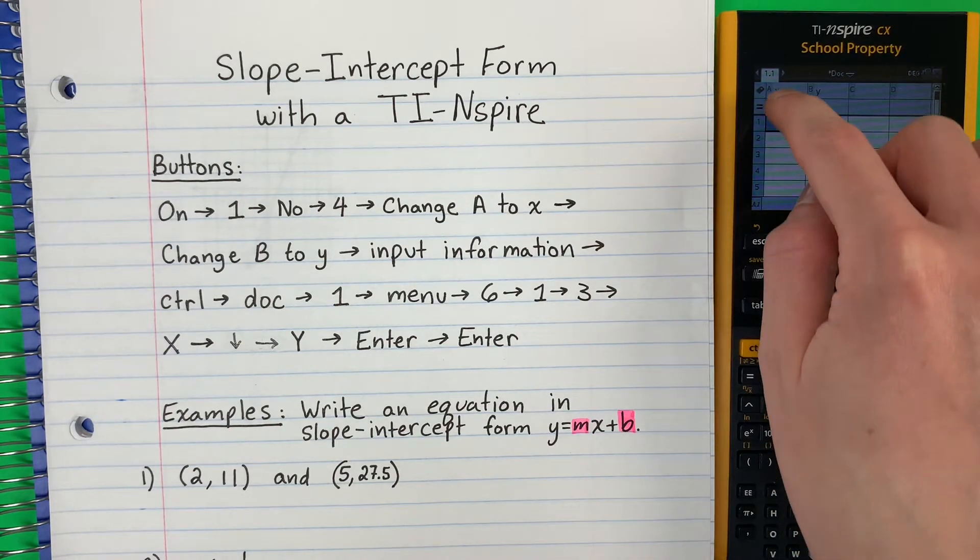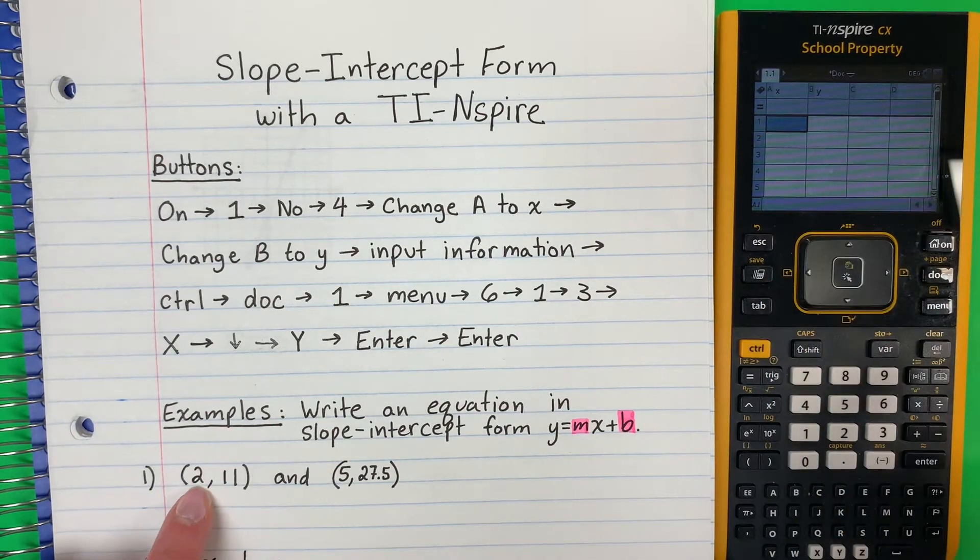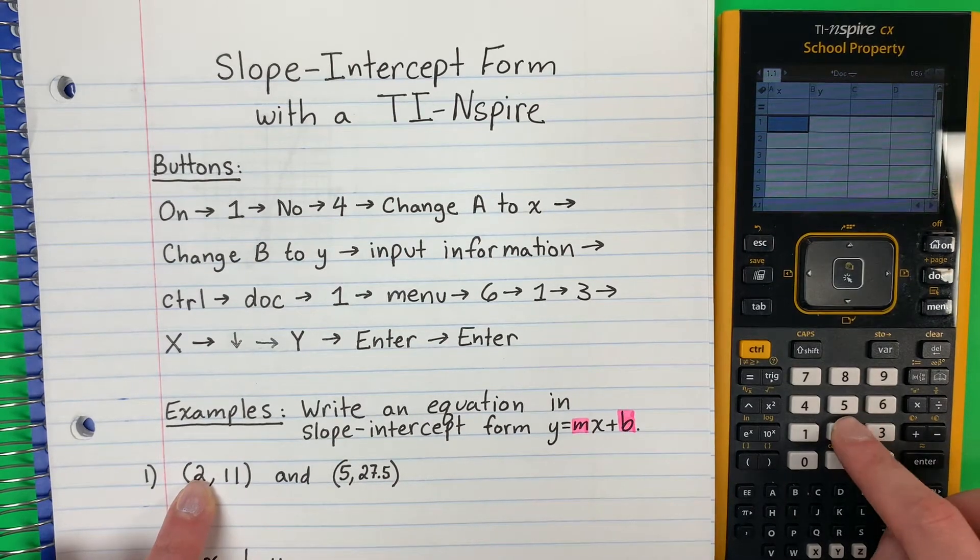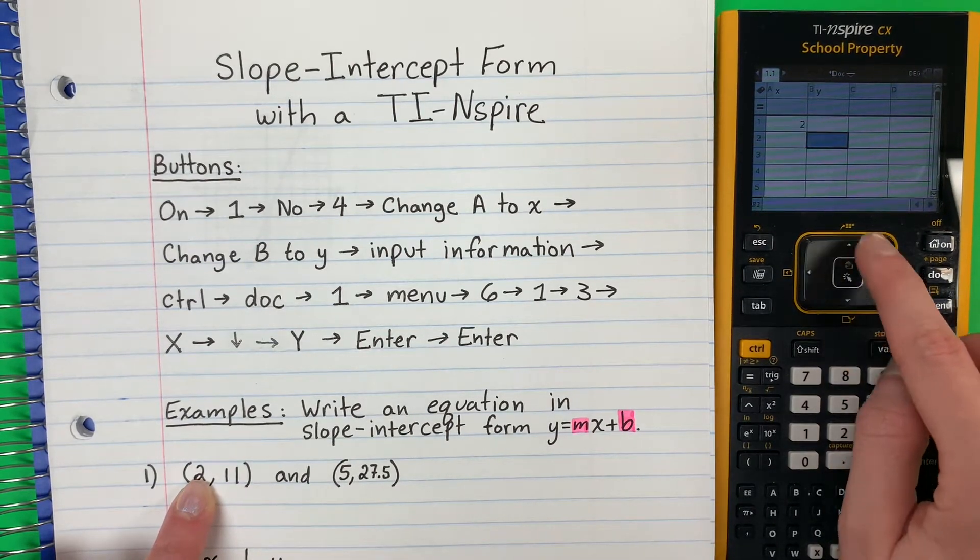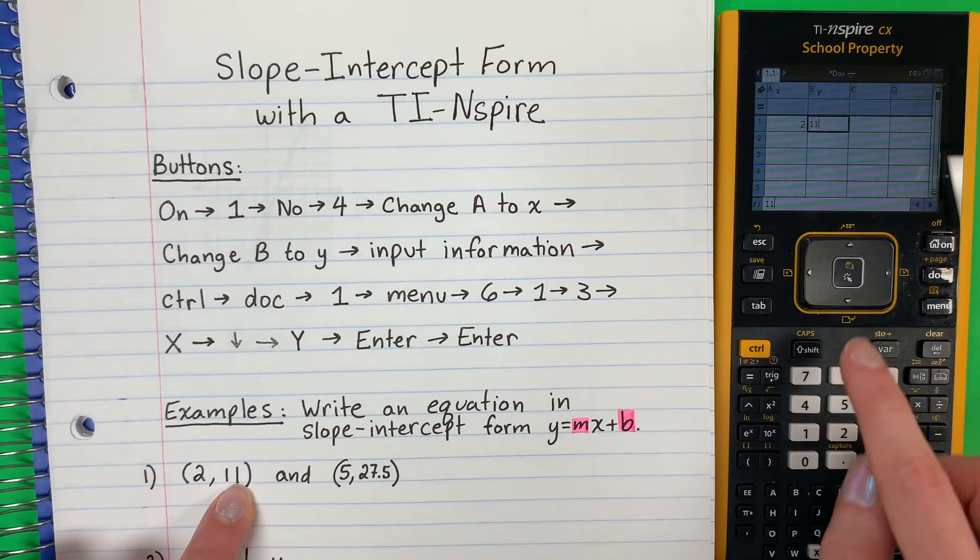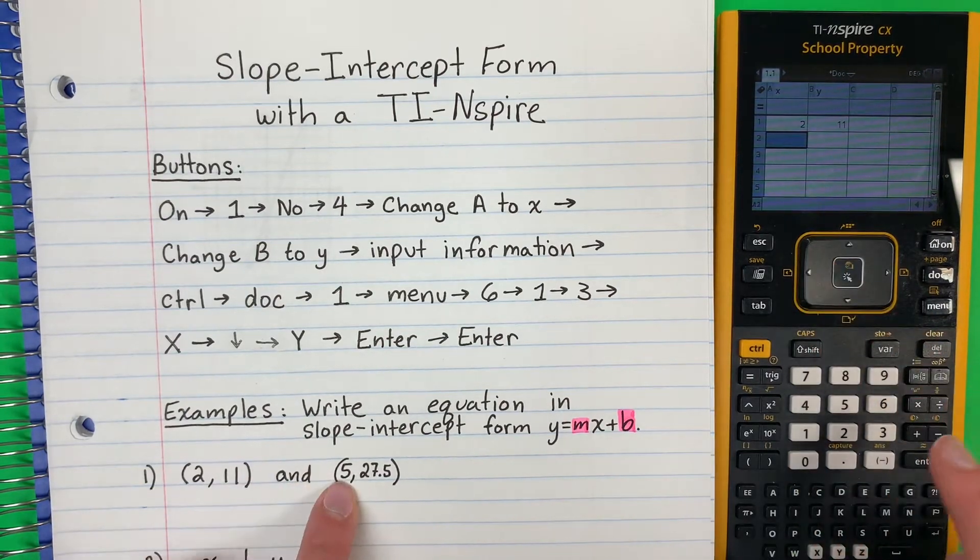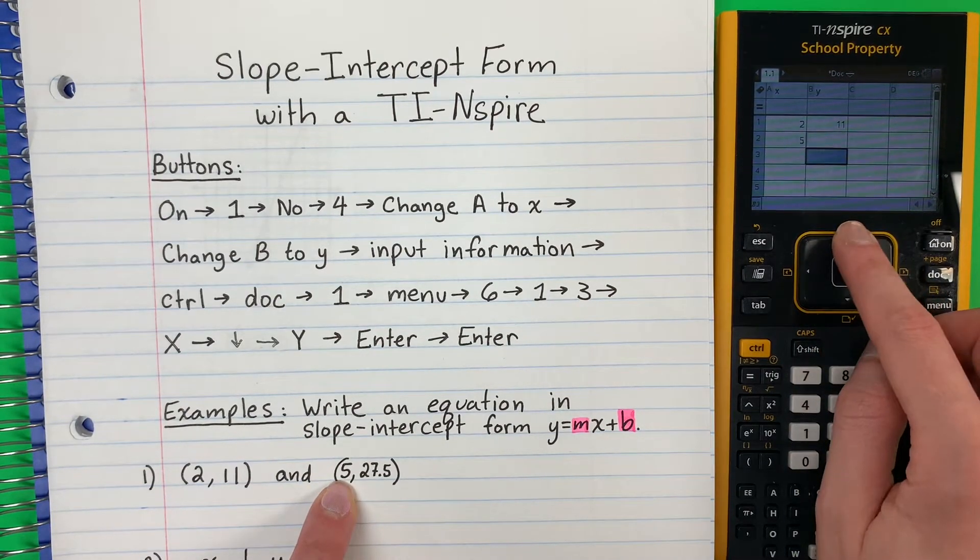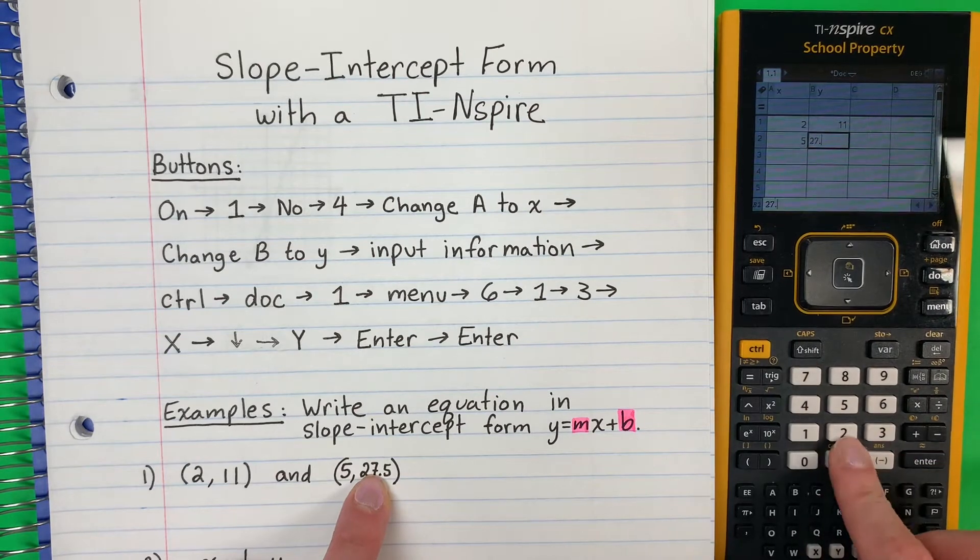So here I'm going to put my x's, here my y's. So I'm going to put 2, 11. 2 is x. And the partner for 2, the y, is 11. And then again, 5 is x. And the partner is 27.5.